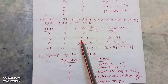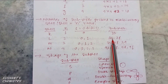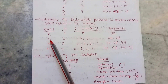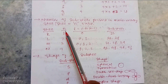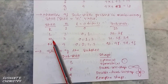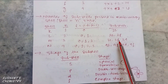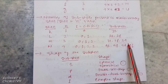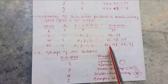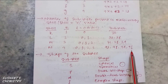For the L cell, the value of l equals 0 and 1: for l=0, s sub-cell; for l=1, p sub-cell. So L cell contains 2s and 2p sub-cells. For M cell: 3s, 3p, and 3d sub-cells. For N cell: 4s, 4p, 4d, and 4f sub-cells.